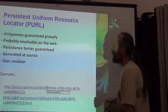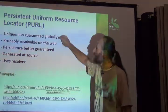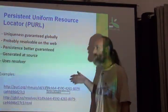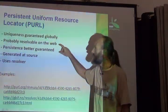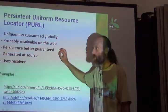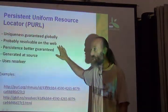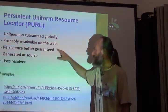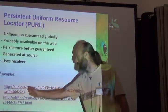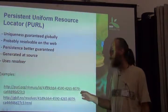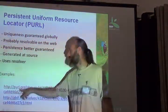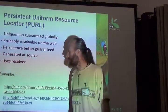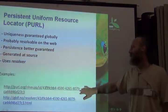On this slide there are several important characteristics. There's a uniqueness guarantee. It's probably resolvable on the web if it was resolvable to begin with, and you keep it up to date when you change locations. If you forget to change where the URL points, it's no longer resolvable — so you still have a responsibility. Persistence is better guaranteed than with a plain URL. You can generate PURLs yourself; the only part not under your control is your contract with purl.org to resolve them.